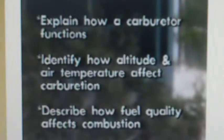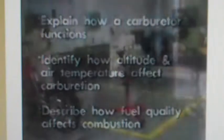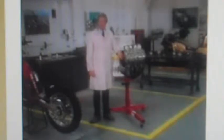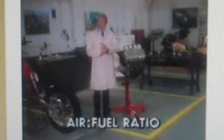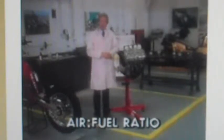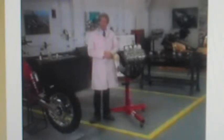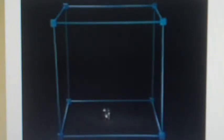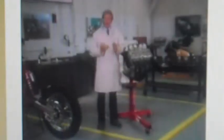You will also be able to identify how altitude and air temperature affect carburation, and describe how fuel quality affects the combustion process. A gasoline engine runs on a mixture of air and fuel. The proportion of air and fuel is called the air-fuel ratio, with the air always listed first. A 14.7 to 1 ratio of air to fuel gives the best combination of power and fuel economy — this ratio applies to the weights of air and fuel, not their volumes. The engine takes in about 14.7 ounces of air — that's 12 cubic feet of air — for every ounce of fuel it uses.